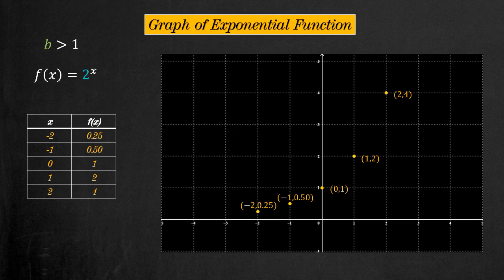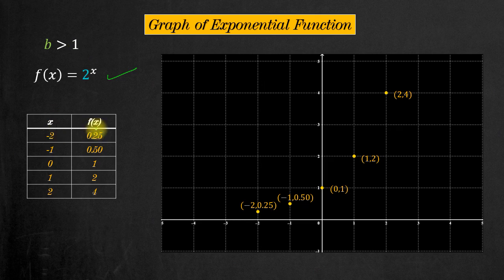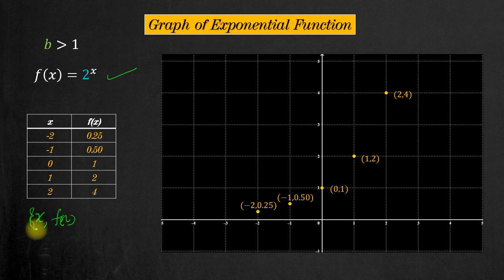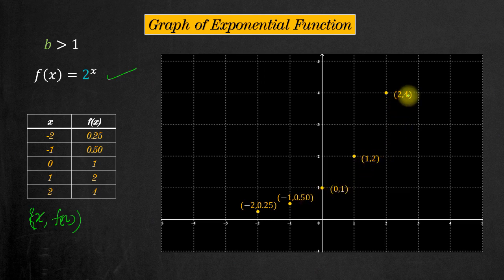Now let's see how to sketch the graph of this function. Take the example f(x) = 2^x, where b = 2, which is greater than one. Putting in values: x = -2 gives f(-2) = 0.25; x = -1 gives 0.50; x = 0 gives 1; x = 1 gives 2; x = 2 gives 4. These ordered pairs — (-2, 0.25), (-1, 0.50), (0, 1), (1, 2), (2, 4) — can be plotted on the coordinate axis.